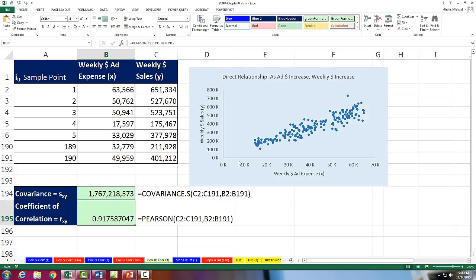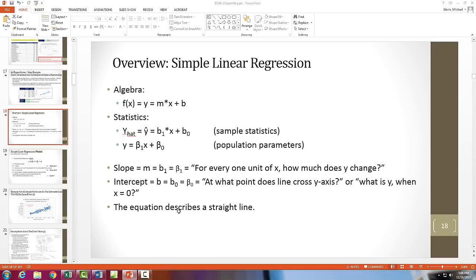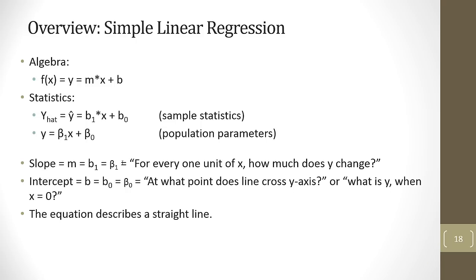Now, given that we see there's a direct relationship visually and in our numerical measure, we want to create an equation that can help us predict. We want to be able to say something like $43,000 for weekly ad expense, what should the weekly sales be? Now we're going to jump over to our PowerPoints. I'm going to hit Shift-F5 to start on this slide, slide 18.